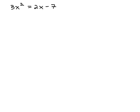In this video, we're going to solve the equation 3x squared equals 2x minus 7 using a method called completing the square.